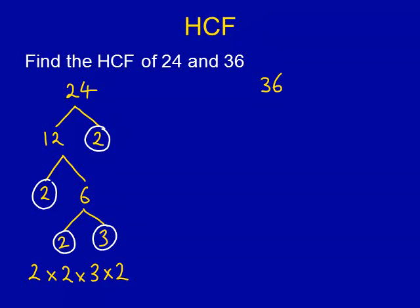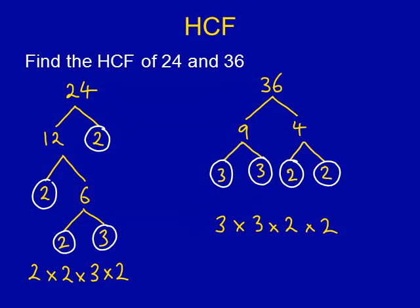We now do the same for 36. We're going to split it up into its prime factors. I'm going to do all of this in one go. When we split 36 into its prime factors, we get 3 times 3 times 2 times 2.